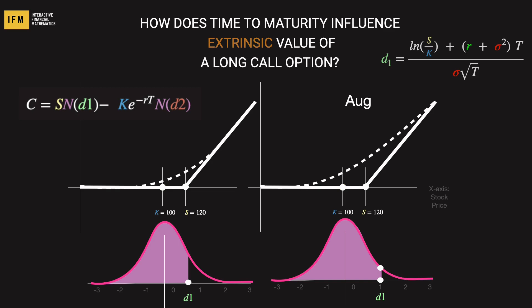The term K times e raised to negative R times T times N(D2) also sees a rise because the escalated D1 usually leads to an increased D2, thus leading to a higher N(D2), which raises the expected present value of the future cost to exercise the option. To summarize, as time to expiration increases — given all other things remain equal — both components of the option price usually increase. This results in the extrinsic value being larger for a longer-term option compared to a short-term option, a phenomenon generally known as the time value of options, and a crucial concept in understanding options pricing.